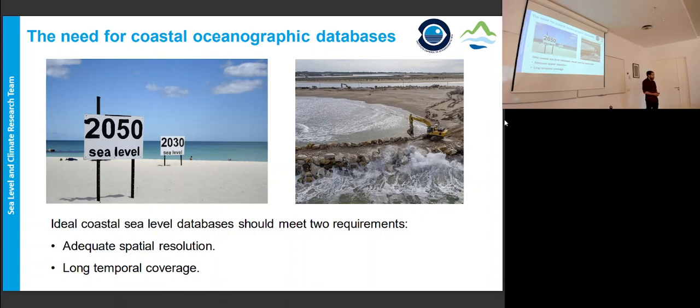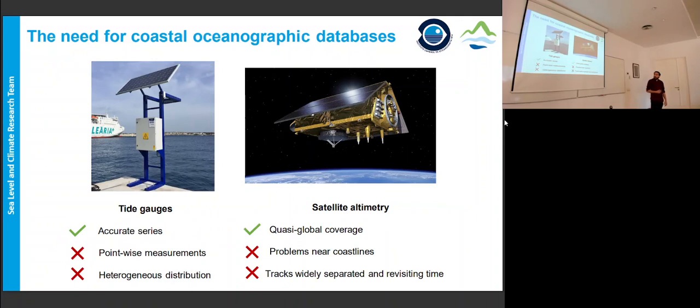We need long enough series, especially if we want to study low-frequency processes, like for example, to estimate the sea level trends on the coast. So, to make a proper coastal management, we need oceanographic databases, specifically of sea level on the coast. The ideal coastal sea level databases should have adequate spatial resolution and also must be long enough. Let's review the sources of observation we have. The main source of observation at coastal regions are the tide gauges. They have been used for centuries and can provide really accurate series, but they have a main limitation. They provide point-wise measurement, only information of the location where they are installed.